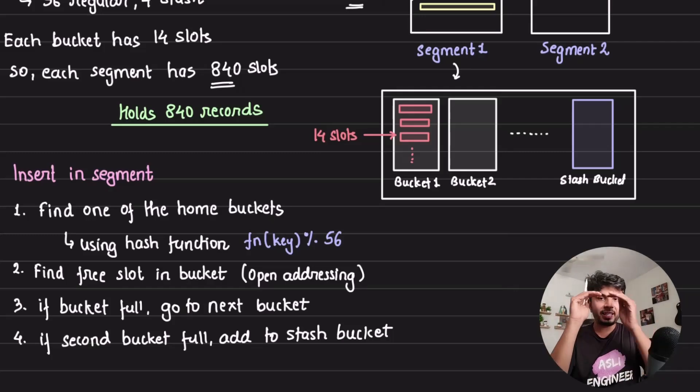I'm stating it again how the insertion happens in the segment. In segment, we first find the home bucket where it's present, passing through the hash function mod 56. Find the first free slot in the bucket. How would I do it? Open addressing, not chaining.